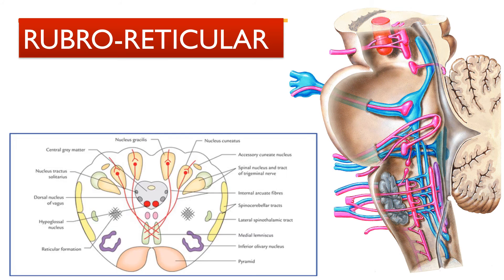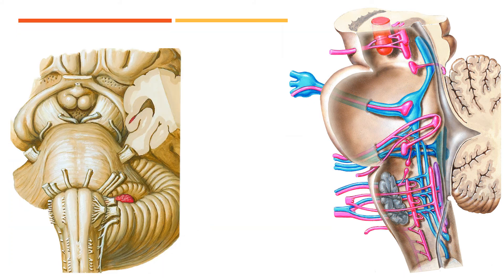The rubro-reticular tract extends from the red nucleus to the reticular nucleus. Additionally, the rubroolivary tract extends from the red nucleus to the olives of the medulla oblongata.